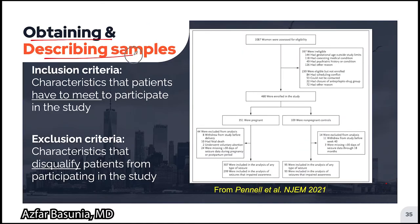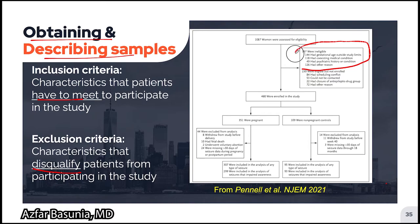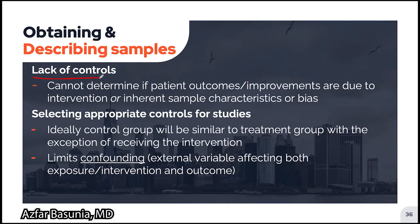Moving on to obtaining and describing samples. Inclusion criteria are characteristics patients must meet to participate in the study, while exclusion criteria are characteristics that disqualify a patient. This information can be found in the study protocol, and authors often represent it in graphs. If a study lacks controls, it is difficult to determine whether patient outcomes are due to the intervention itself or due to inherent sample characteristics or some form of bias. Therefore, it is very important to select appropriate controls for studies.